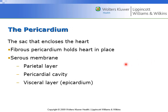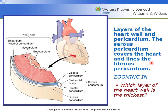The pericardium is the sac that encloses the heart — it consists of a membrane and different layers. The endocardium is the layer most intimate with the blood that flows through the heart. The myocardium is the muscle of the heart itself. And the epicardium is the outermost layer, most intimate with the parietal pericardium.